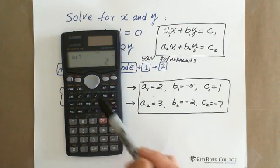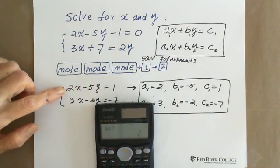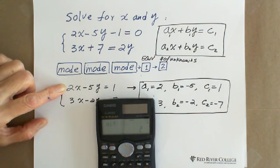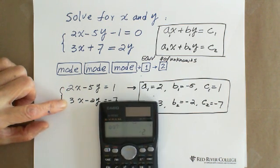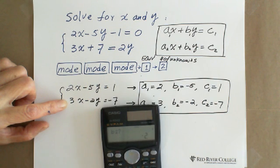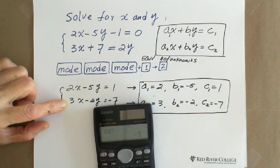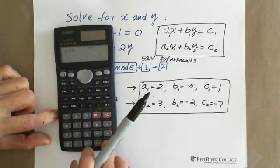Then you want to double check if the constants were right. So you keep pressing equal: A1 equals 2, B1 equals negative 5, C1 equals 1, A2 equals positive 3, B2 equals negative 2, C2 equals negative 7. And everything correct. Hit equal sign.